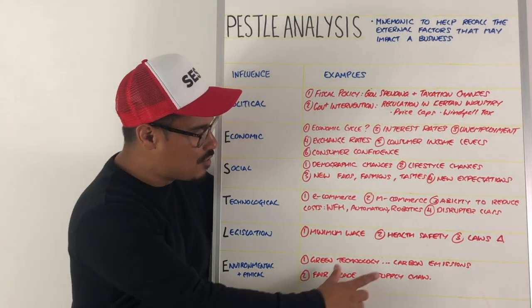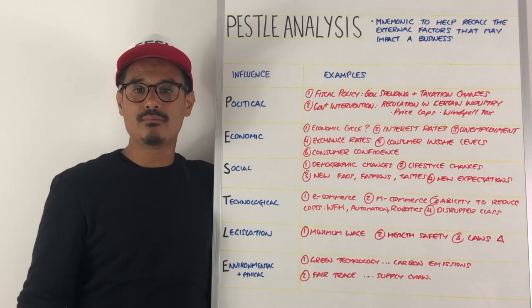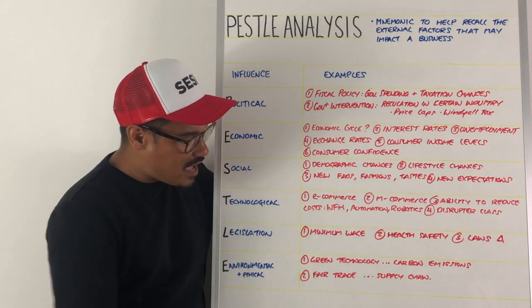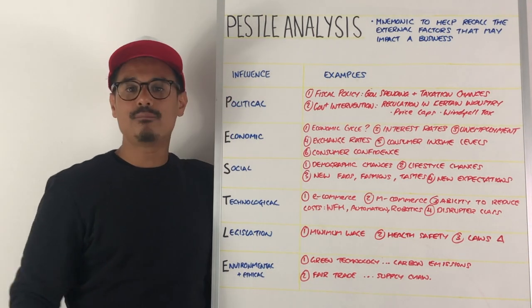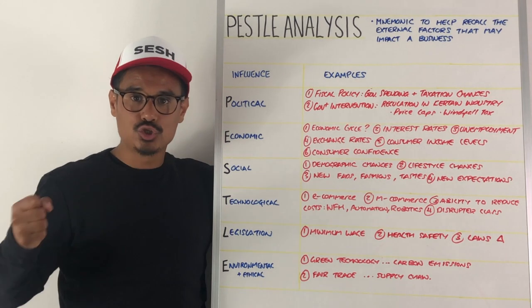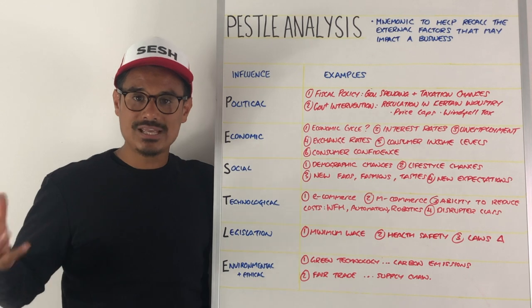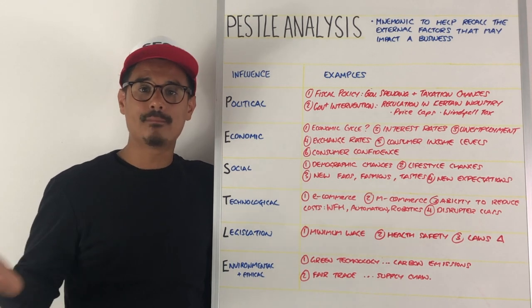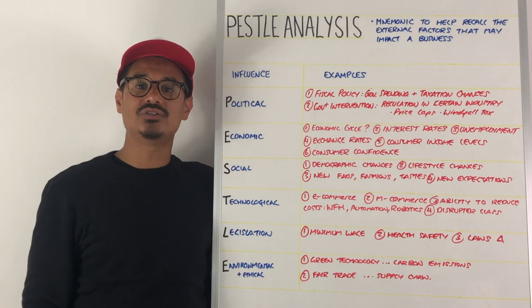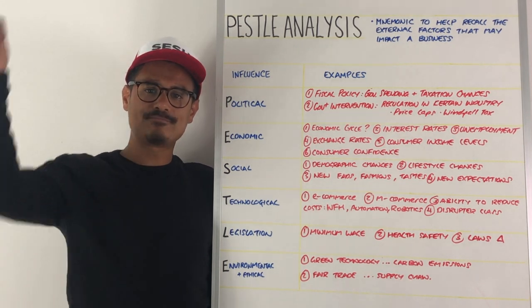Environmental and ethical changes include movements to green technology driven by carbon emission taxes that may be imposed on your business. Also, fair trade — using fair trade means you may change your supply chain, which comes with increased costs, but may also generate extra demand because consumers are happy that you're using fair trade. I hope that helps with PESTEL analysis — see you in the next session.